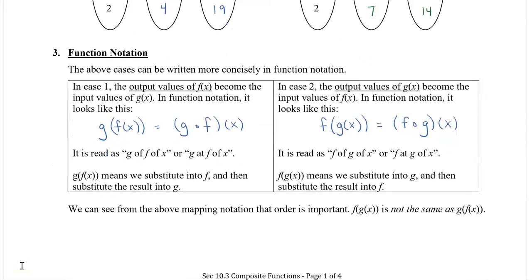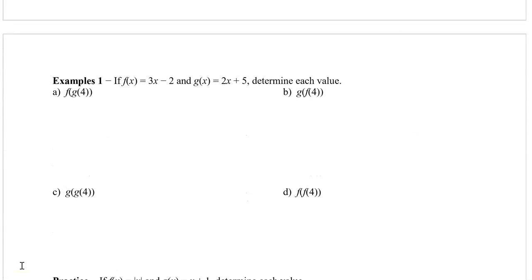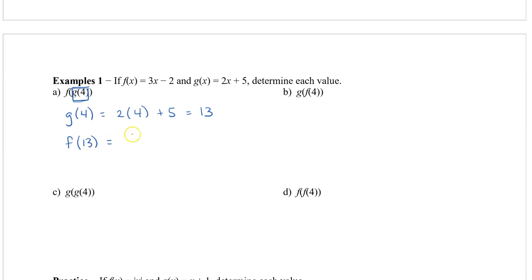Let's look at some examples without mapping notation. In this first one, we have f of g of 4. That means we take the 4 and substitute it into x for the g function first. So g of 4 means 2 times 4 plus 5, which gives us 13. So g of 4 equals 13. We replace g of 4 with 13, so we now have f of 13, and plugging into f: 3 times 13 minus 2, which equals 37.